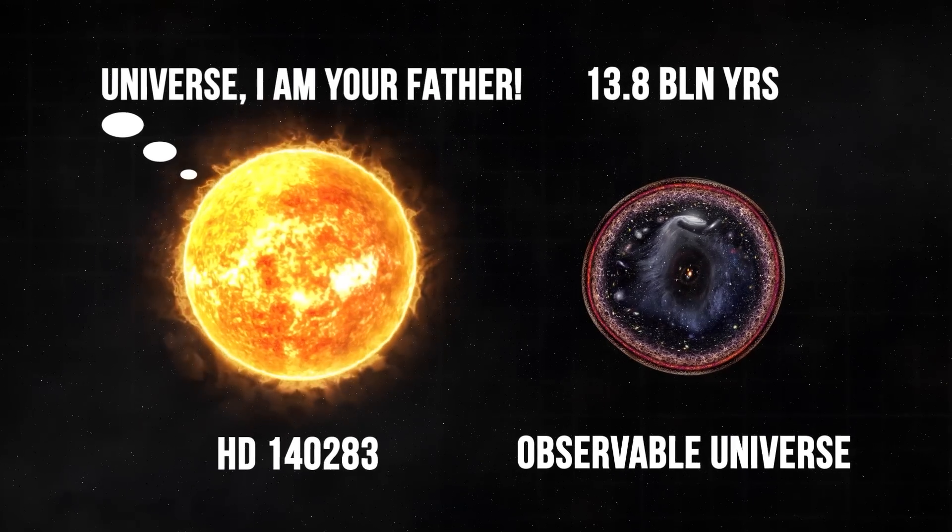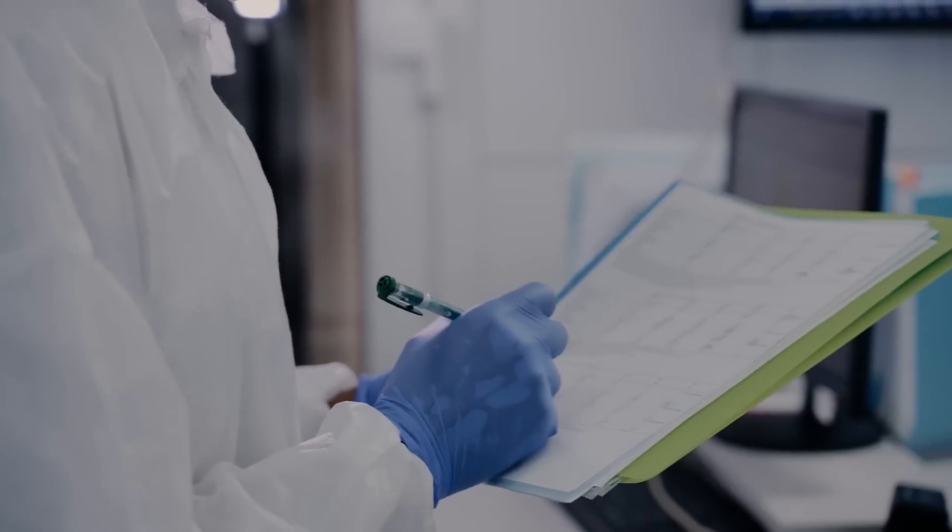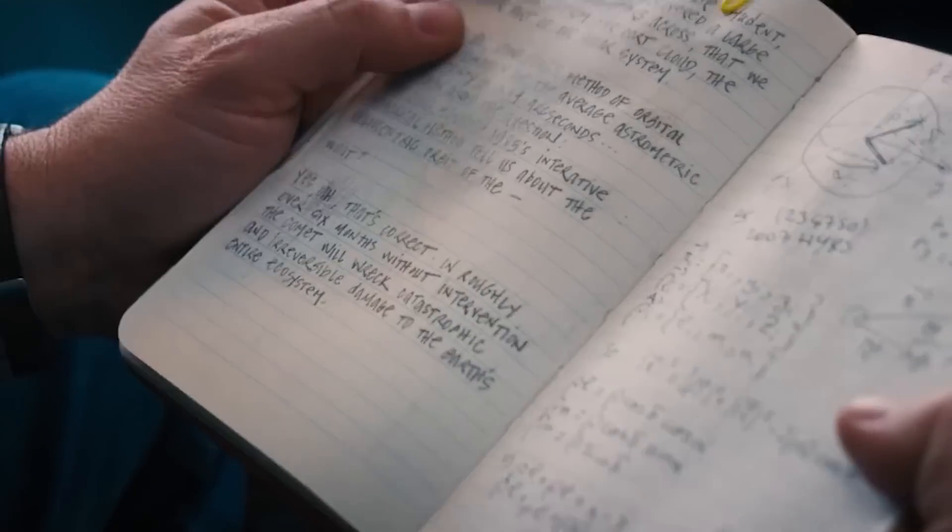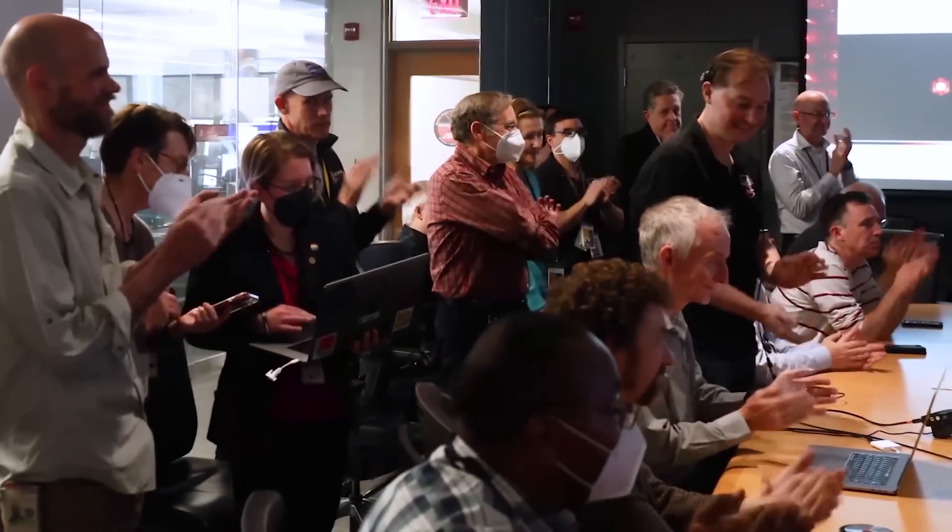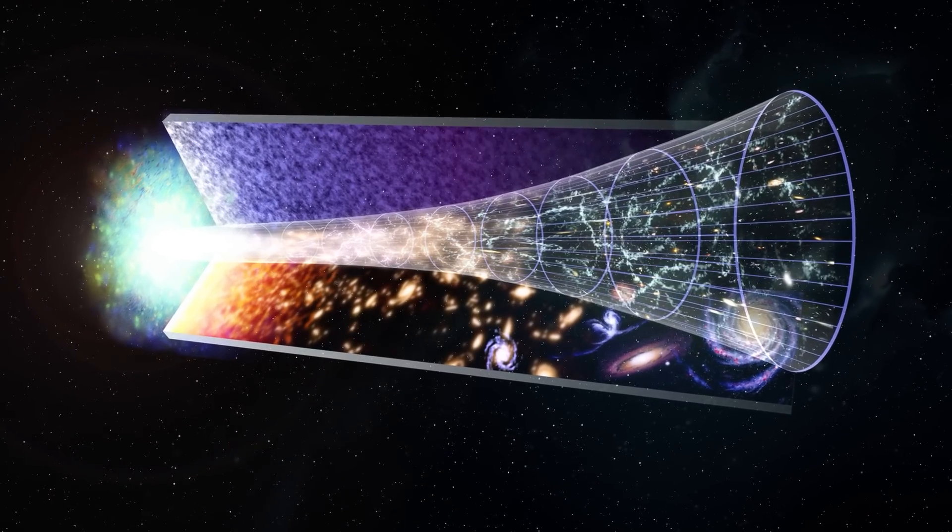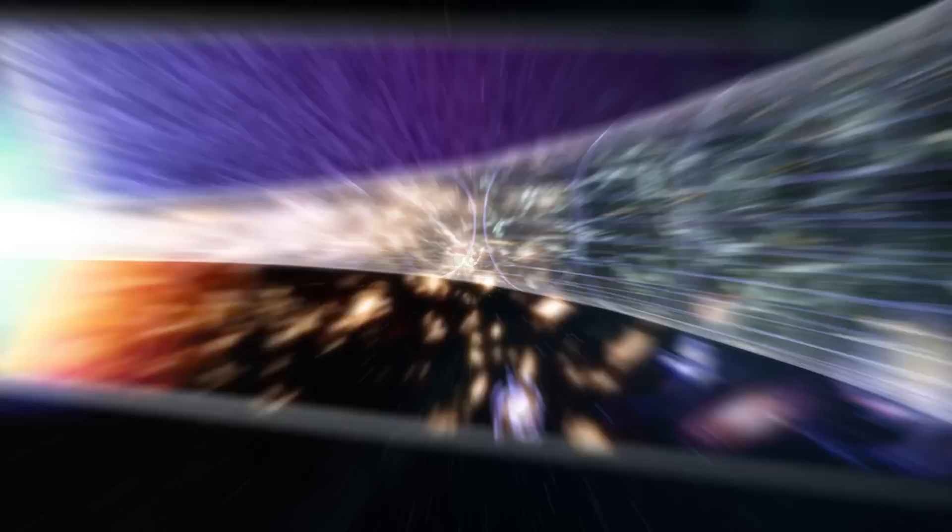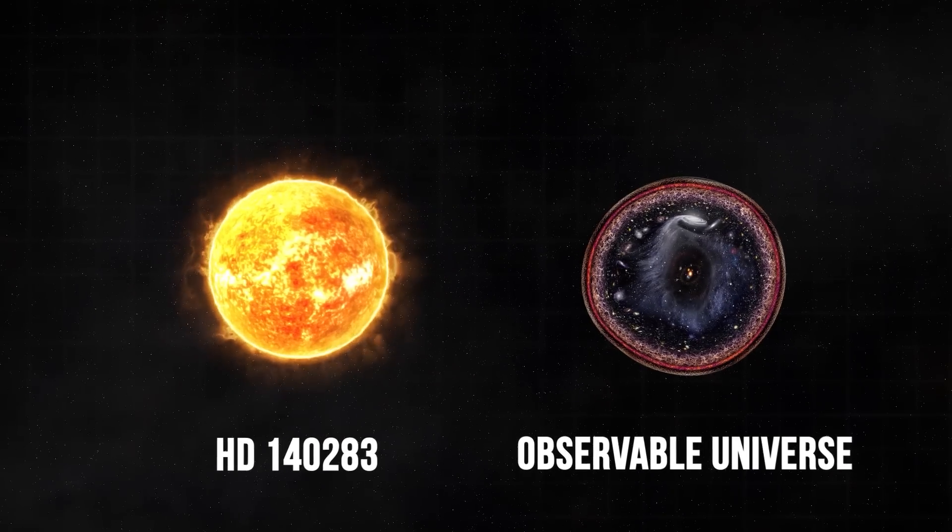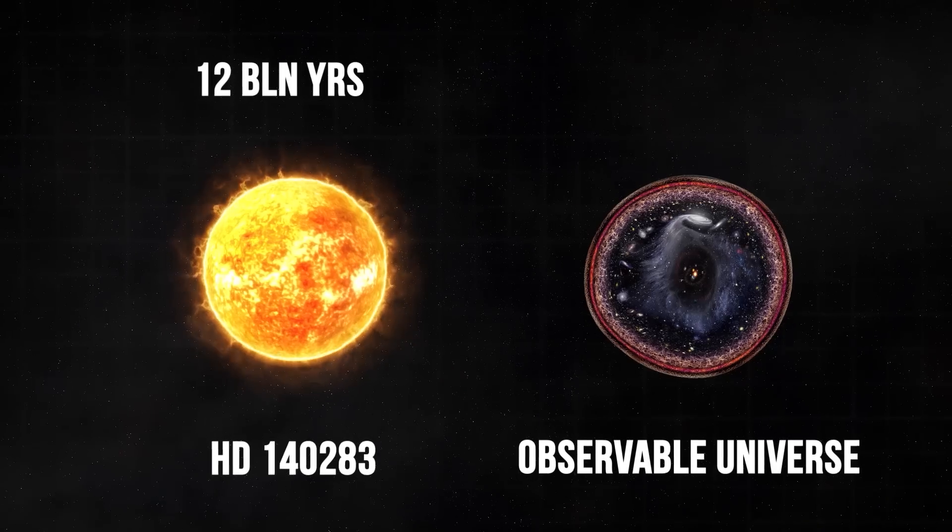But that can't be true. Astronomers spent eight years searching for an error in the calculations and finally managed to squeeze the incredible star into the timeline of our universe. Now Methuselah is officially 12 billion years old.